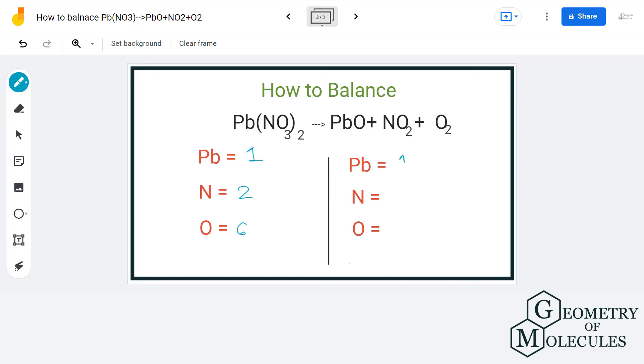On the product side, we have one lead, one nitrogen, and five oxygen atoms.